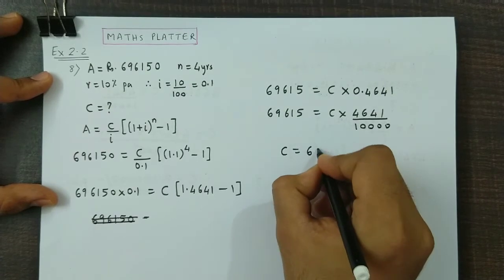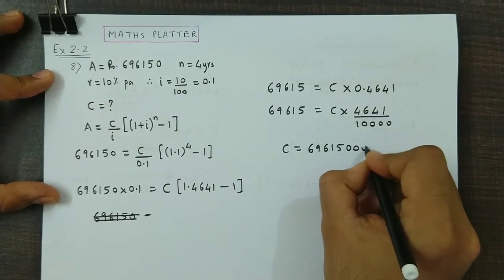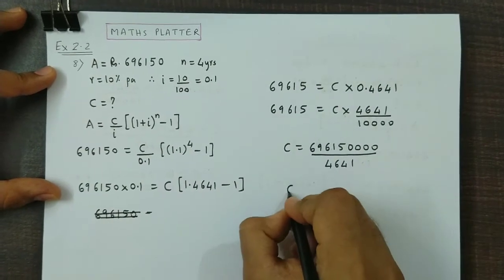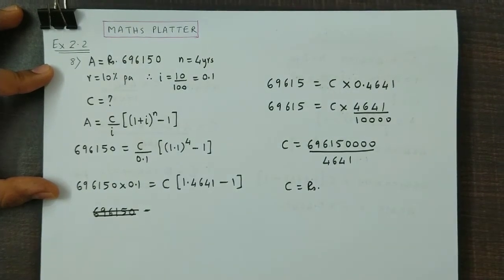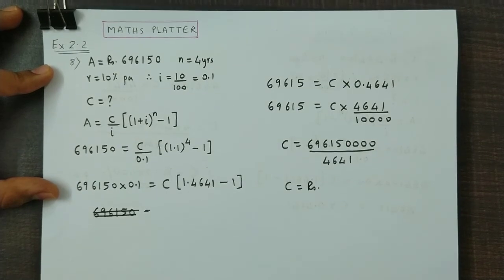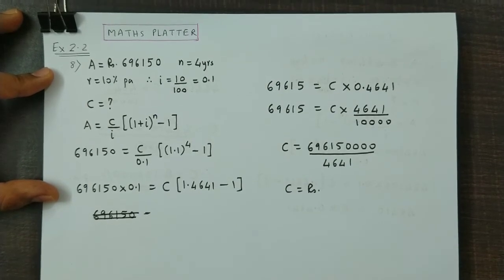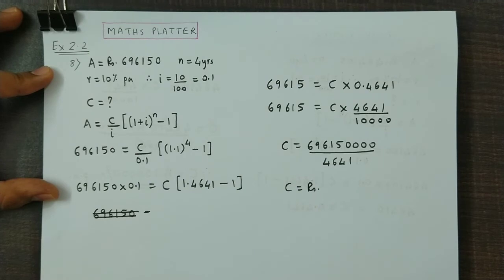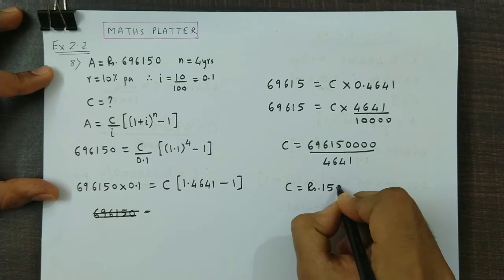So, C value will be 69615, multiply by 10,000, divided by 4641. Now, if we perform this division, we would obtain 696150000 divided by 4641. We get the answer as 150,000.